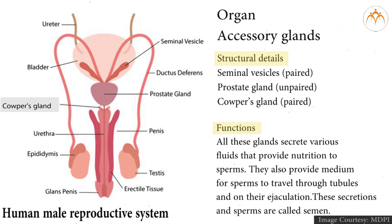Accessory glands: seminal vesicles (paired), prostate gland (unpaired), Cowper's gland (paired). All these glands secrete various fluids that provide nutrition to sperms. They also provide a medium for sperms to travel through tubules and on their ejaculation. These secretions combined with sperms are called semen.